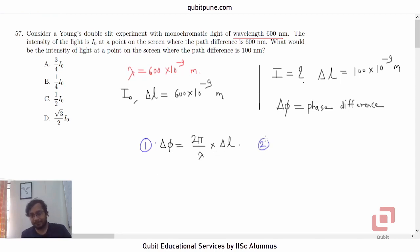And number two, intensity at any location is directly proportional to square of cosine of half of the phase difference. It's not cos squared delta phi, it is actually cos squared delta phi by 2. If you know these two formulas then there is no problem in solving the given numerical. It is very simple.